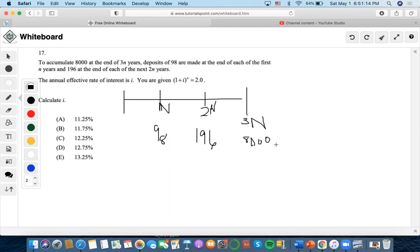The first thing we're going to start with is deposits of 98 made at the end of each of the first N years. Since 98 is made at the end of each of the first N years, there are N amount of payments of 98. So let's find the accumulation of 98.